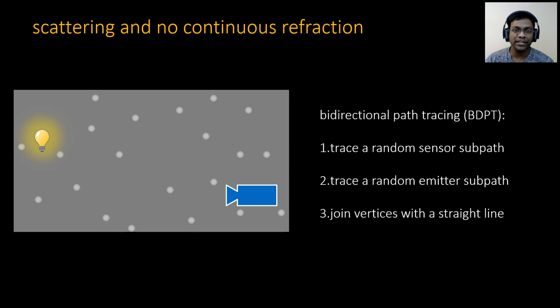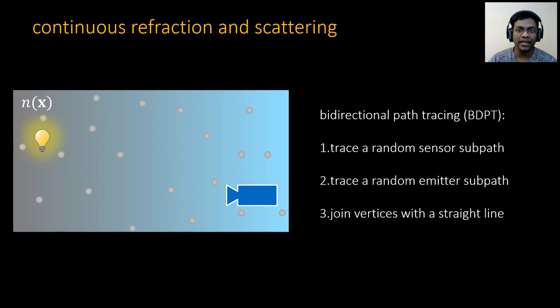In bidirectional path tracing, we iterate over sampling paths. To trace a path, we start from the sensor and trace a random sensor subpath, and then we trace a random emitter subpath. We join the vertices with a straight line to create a light path.